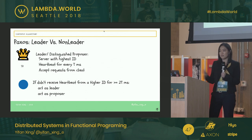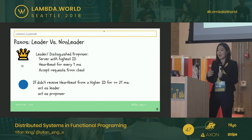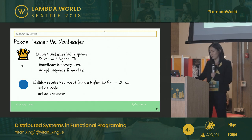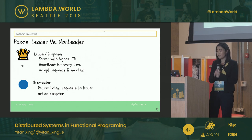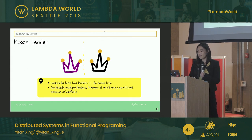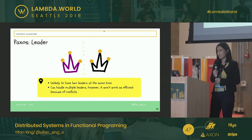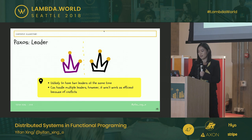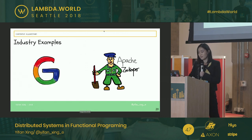In Paxos, a leader is a distinguished proposer — a server with the highest ID — responsible for sending heartbeats to other machines periodically, saying it's still alive and should be treated as leader. Its responsibility is to accept client requests and use basic Paxos to achieve consensus. As a follower, if you don't receive a heartbeat from the leader after a certain amount of time, you automatically assume the server has crashed and try to act as a leader. Some industry examples include Google Chubby and Apache Zookeeper.